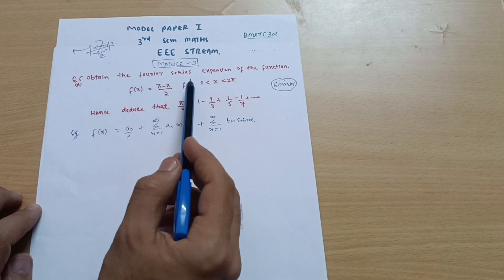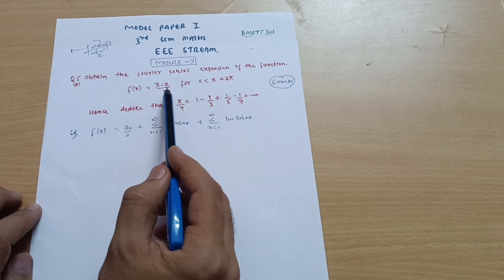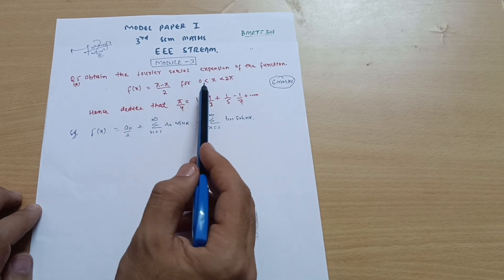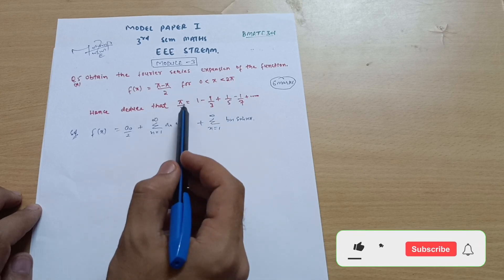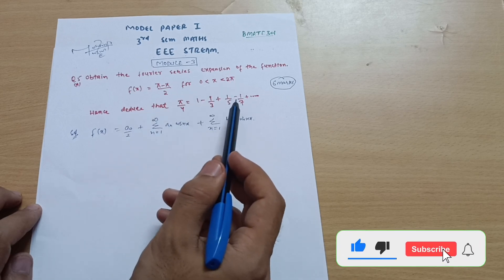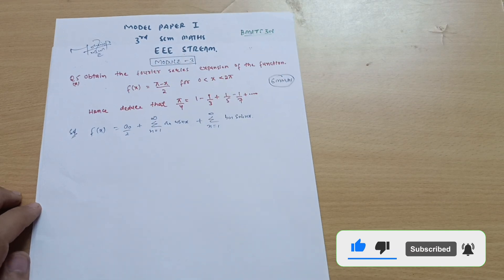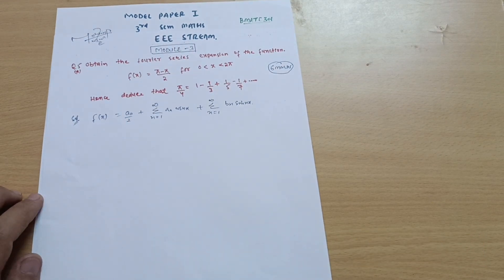Obtain the Fourier series expansion of the function f(x) = (π − x)/2 for 0 < x < 2π. Hence deduce that π/4 = 1 − 1/3 + 1/5 − 1/7 + ... and so on. If you have not watched the previous video on Fourier series, the link is provided in the description box.